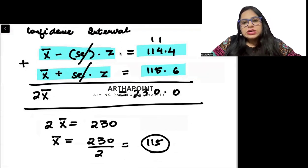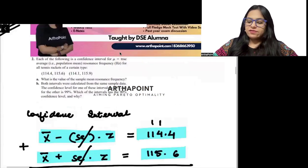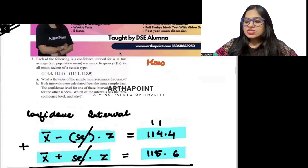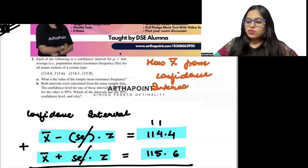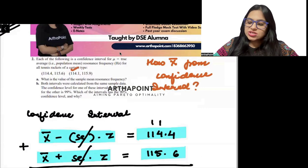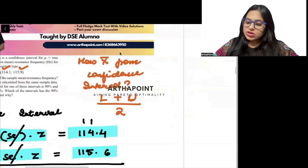So from here, we have learned a very important thing today. What is the thing that we have learned? How to go ahead? We have learned how to find a sample mean from the confidence interval. From confidence interval. How to find sample mean from confidence interval.